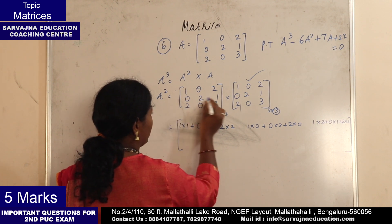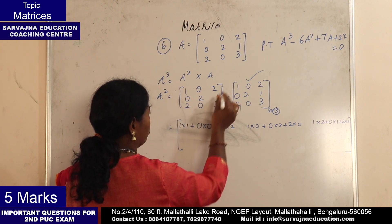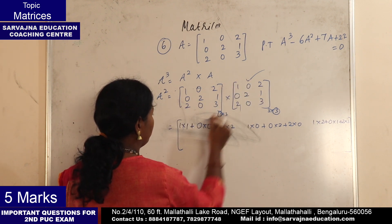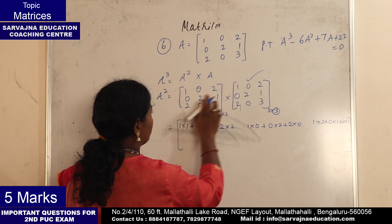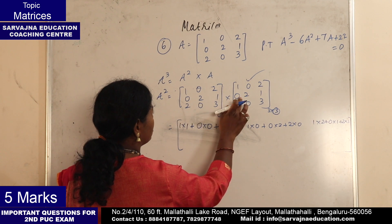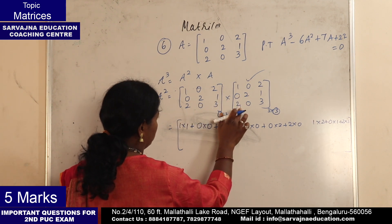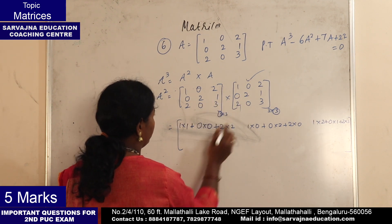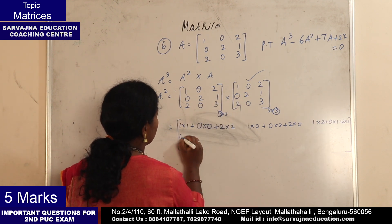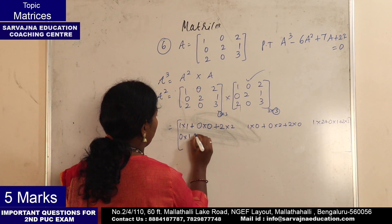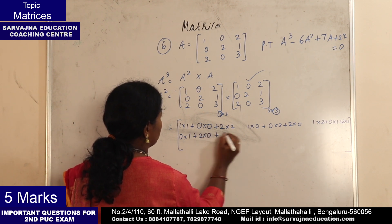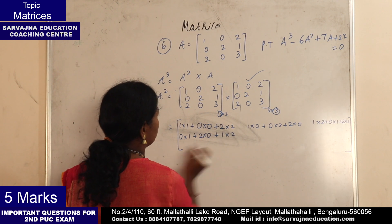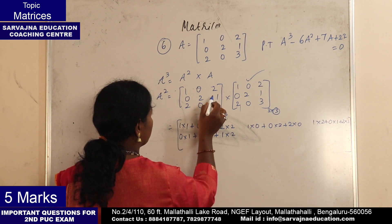Same type - second row, each column: first into first plus second into second plus third into third. So: 0 into 1 plus 2 into 0 plus 1 into 2 for the second row first column element. Continuing the same multiplication pattern for all remaining elements.